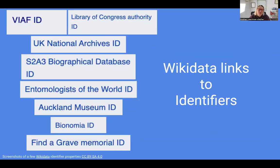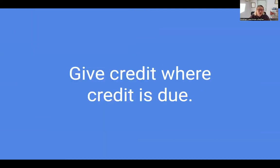The Wikidata item can also be linked to identifiers created by other databases for their entomologist — identifiers like library identifiers, identifiers for archives or biographical databases, museum identifiers, genealogical database identifiers — the list just goes on. By adding these institutional identifiers to Wikidata, Wikidata then becomes this hub linking to numerous institutions that hold information on that entomologist. And remember, my aim for doing all this work is to make sure that these entomologists get credit and recognition for their contributions.